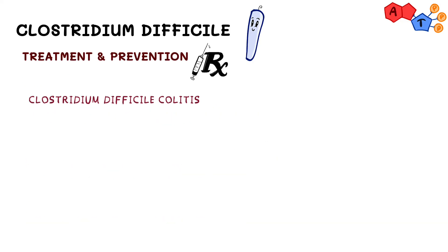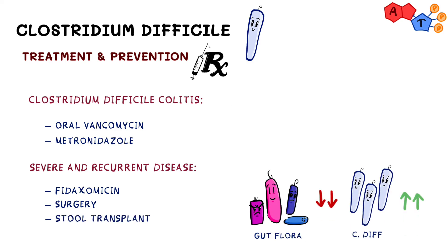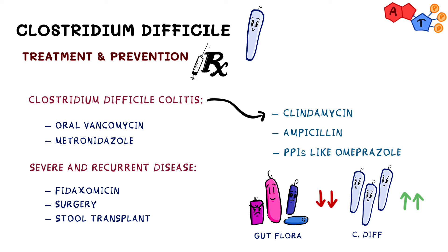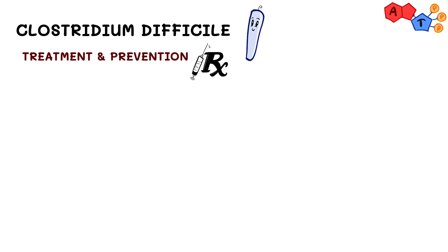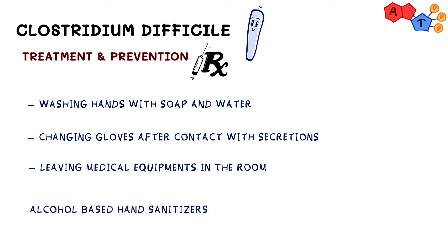Clostridium difficile colitis can be treated with oral vancomycin or metronidazole. Therapy for severe or recurrent disease is fidaxomicin, surgery, or stool transplant. Many antibiotics can lead to C. diff colitis, such as clindamycin or ampicillin, and proton pump inhibitors like omeprazole are also associated with it. Important contact precautions include washing hands with soap and water, changing gloves after contact with any secretions, and leaving the stethoscope and blood pressure cuff in the room. Alcohol-based hand sanitizer cannot kill spores, which is why handwashing with soap and water is critical.